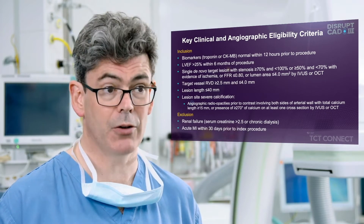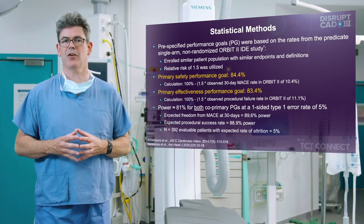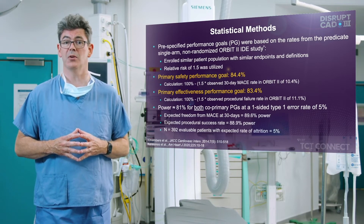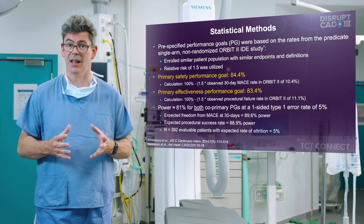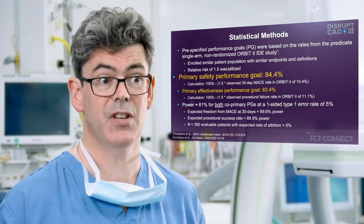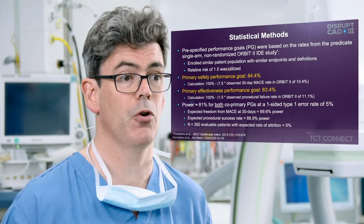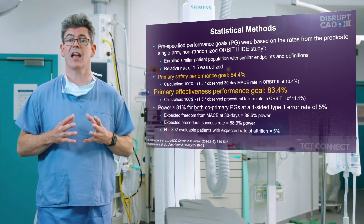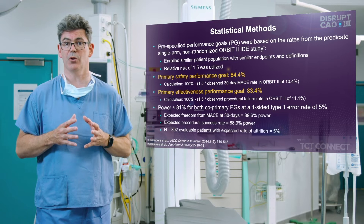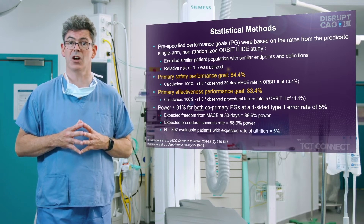Exclusion criteria included renal failure defined as creatinine greater than 2.5 or dialysis, and myocardial infarction within 30 days. The pre-specified performance goals were based on rates from the predicate single-arm, non-randomized ORBIT2 IDE study for orbital atherectomy, which enrolled a similar patient population with similar endpoints. A relative risk of 1.5 was used per FDA guidance. The primary safety performance goal was 100% minus 1.5 times the observed 30-day MACE rate of 10.4%, and the primary effectiveness goal was based on the procedural failure rate in ORBIT2 of 11.1%. The study was over 80% powered for both co-primary performance goals at a one-sided type 1 error rate of 5%.